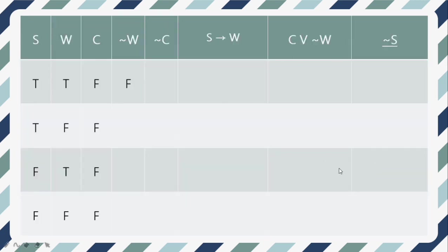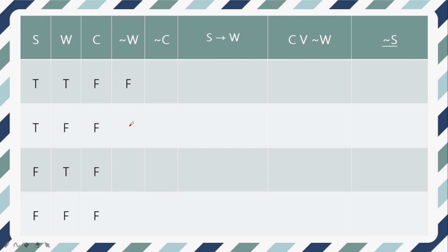Here is the truth table and we are going to be using all of these. To get ¬W, it will be the opposite of the values in W. T becomes F and F becomes T. Therefore the negation column gives us: F, T, F, T. We will be doing the same for ¬C — the opposite of F is T, and the opposite of F is also T.